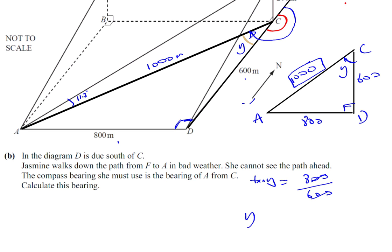So that Y is equal to shift tan, or arctangent, or inverse tan, of 4 over 3. So that's what I need to put into my calculator now.